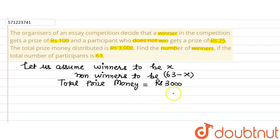Now, the total prize money is 3000. The prize that a winner has got is Rs. 100, so Rs. 100 has been given to a winner. Number of winners are X, so total prize money given to winners is 100X. Plus, the total prize money given to non-winners is 25. Rs. 25 is given to one non-winner, but there are 63 minus X non-winners. So total prize money given to non-winners will be 25 multiplied by (63 - X), and this sum is equal to 3000. Now, this is a linear equation in one variable and we will solve it for the value of X.